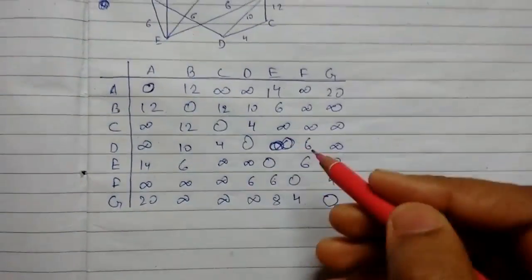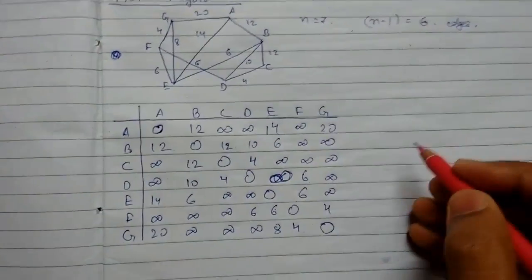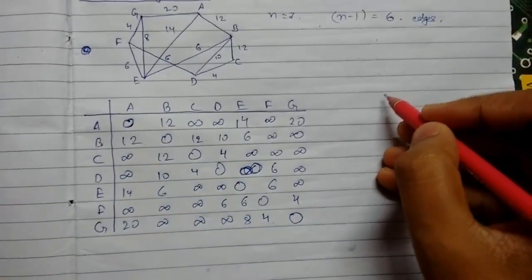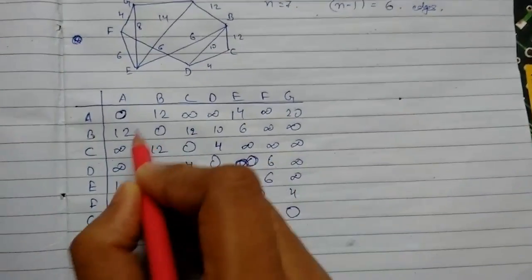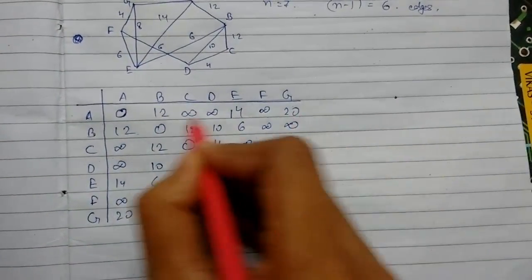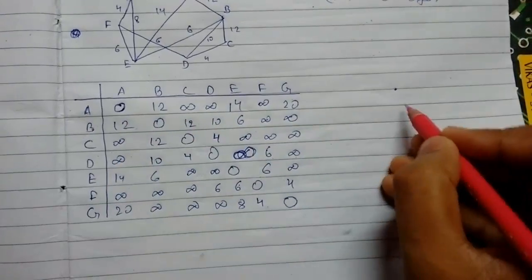So this is our table. We have connected all the paths, so now we'll start from A. Let me start, A to B. We'll now find the minimum in this row. Minimum is 12, zero has not been counted.